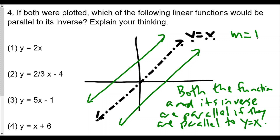So which of the four choices has a slope of 1? Choice one has a slope of 2, choice two has a slope of two-thirds, choice three has a slope of 5. It would be y equals x plus 6, which has a slope of 1. So the answer for number four is choice four.